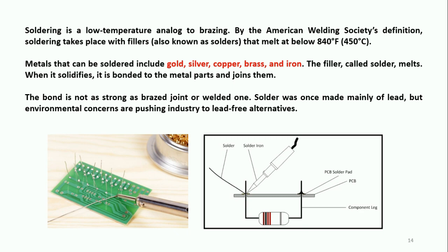The next question: is soldering a permanent joint or a semi-permanent joint? The answer is it's a semi-permanent joint. Whenever you don't want it, or if you made the circuit incorrectly, you can easily remove the component from the PCB board. I will explain how to do that in the last slide.